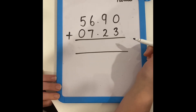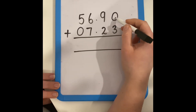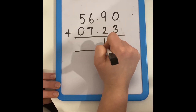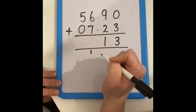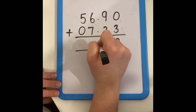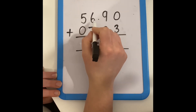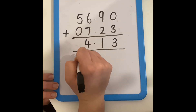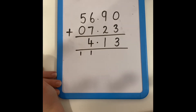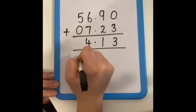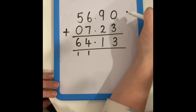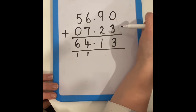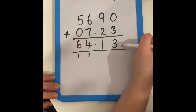It's now much easier for me to add my two decimal numbers together. I know that zero add three is three. Nine add two is eleven, so I need to carry one over into the ones. Remember your decimal point. Six add seven is thirteen, add one more is fourteen. Carry another one over into the tens column. And five add one is six. I can see that 56.9 add 7.23 equals 64.13.